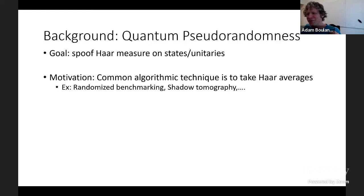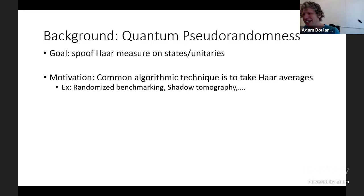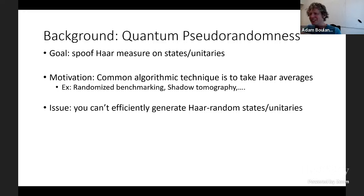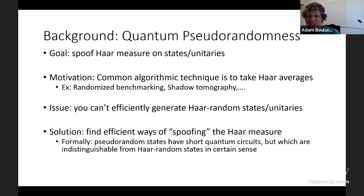Why is spoofing the Haar measure interesting? It's a very common algorithmic technique to take Haar averages. Examples include randomized benchmarking, where you take Haar averages to diagnose errors on a quantum computer, and efficient shadow tomography, where you ideally measure your system in different Haar-random bases to reproduce measurement statistics. But you cannot efficiently generate Haar-random states or unitaries in polynomial time—a standard counting argument shows that creating an N-qubit Haar-random state requires two-to-the-N local gates.